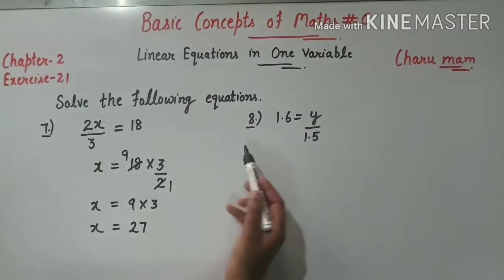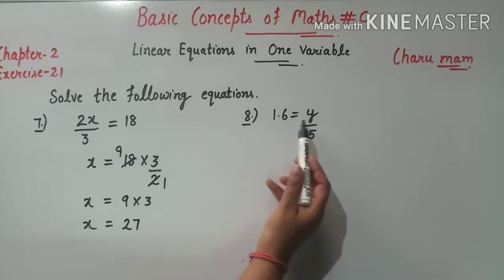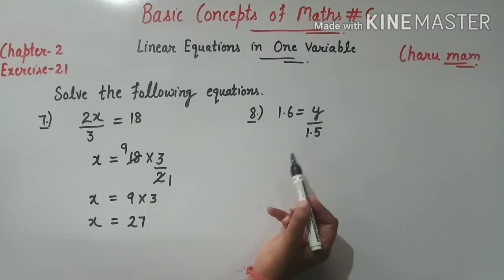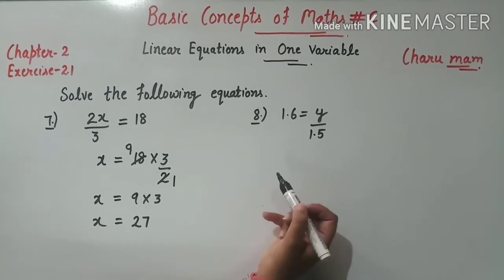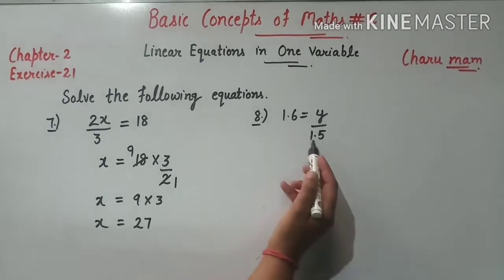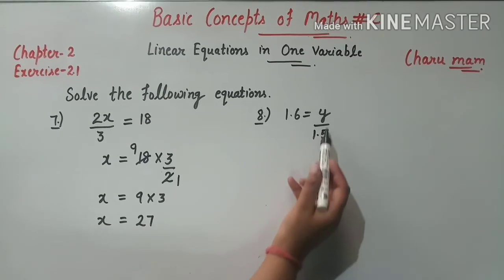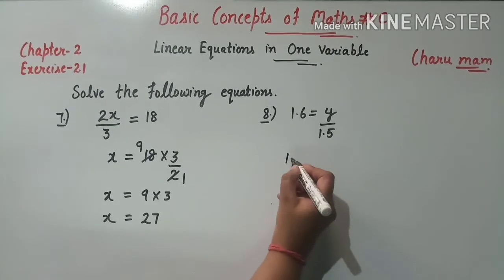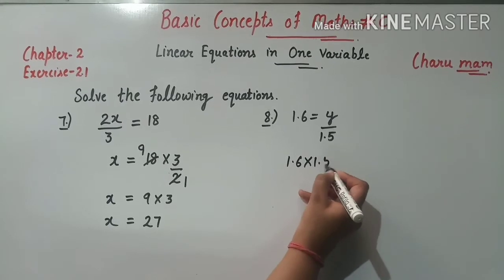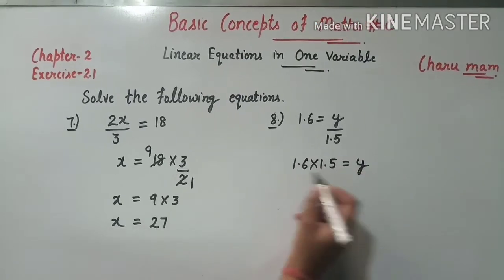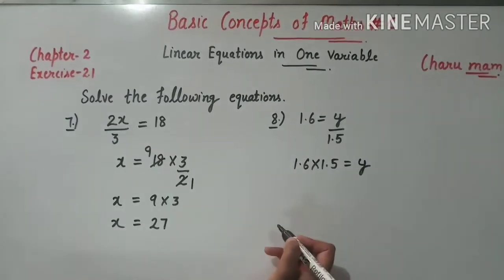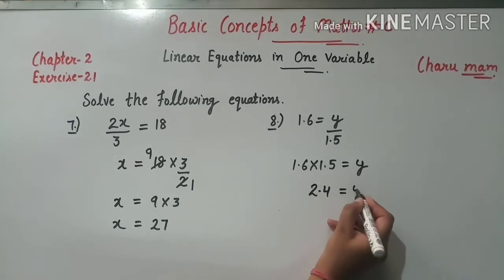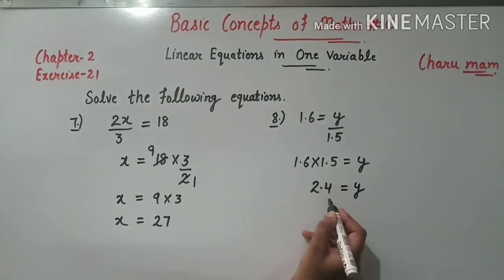Question 8: 1.6 equals y upon 1.5. हमें y की value find करनी है. 1.5, y के divide में है, तो left side multiply में हो जाएगा: y = 1.6 × 1.5 = 2.4. So y की value है 2.4.